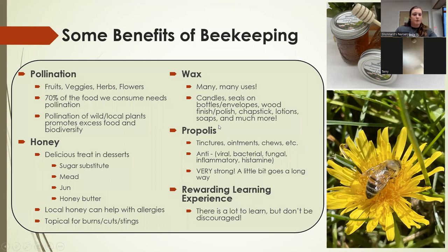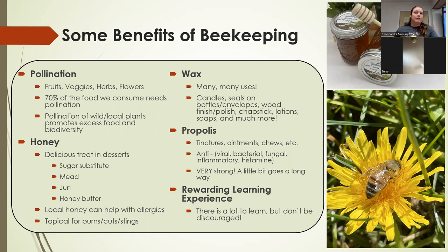Mead is one of the larger honey-based drinks, and jun is a popular thing recently. Local honey can help with allergies — the idea is that your local honey has local pollen. If you're allergic to something around your area, the bees are going to collect that. There's going to be some pollen left over in the honey, and as you consume small bits of that, your body becomes more able to handle the allergens as it gets into full-blown season.